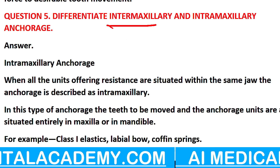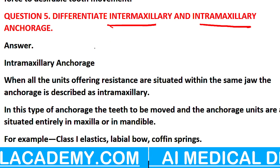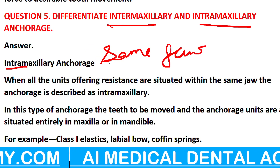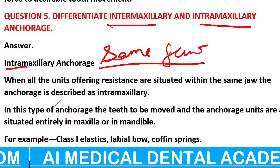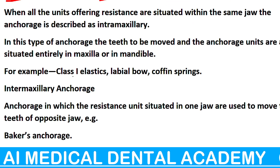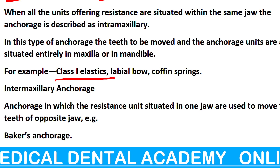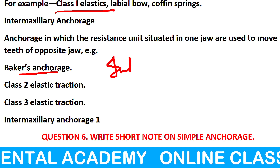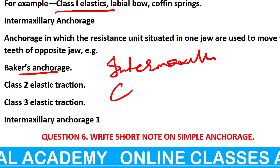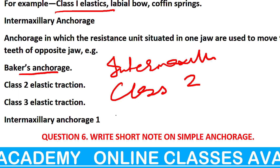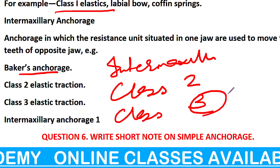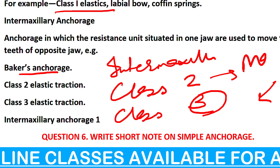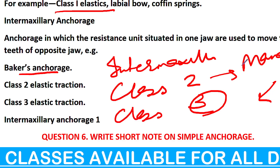Differentiate Intermaxillary और Intramaxillary: Intramaxillary मतलब same jaw — एक ही jaw के अंदर है। Intermaxillary मतलब ऊपर और नीचे के jaw। Intermaxillary के examples: Class 1 — Baker's anchorage. Intermaxillary anchorage — ऊपर का और नीचे का anchorage — यह कब काम आता है? Class 2 occlusion में और Class 3 में। Class 3 होगा तो mandible को पीछे लेना है — Class 2 में mandible को आगे लेना है।